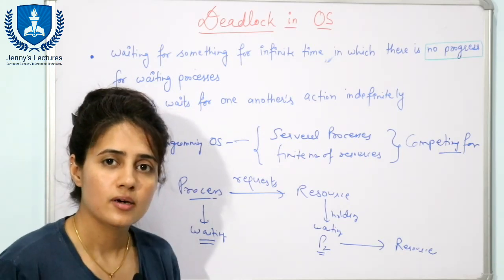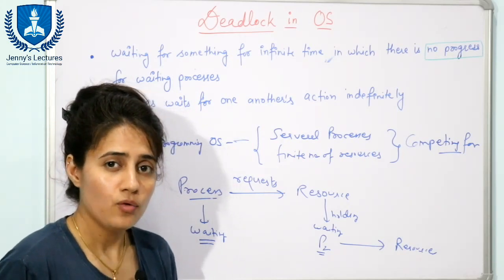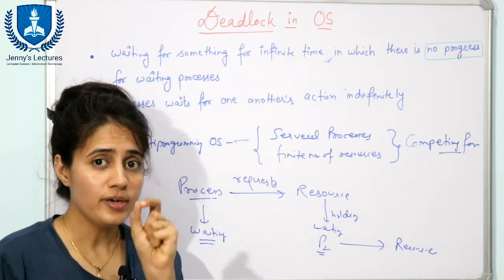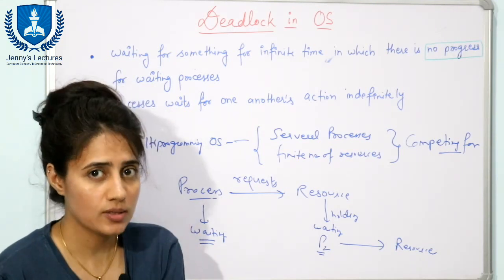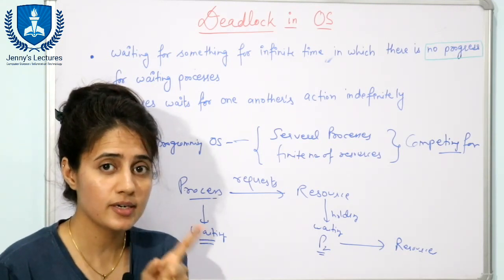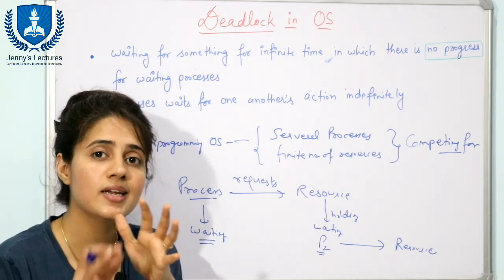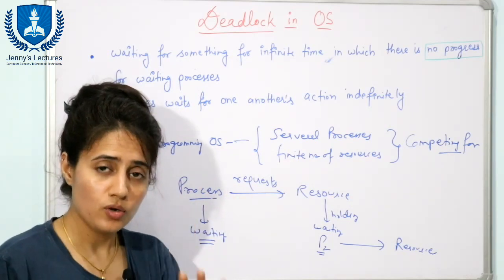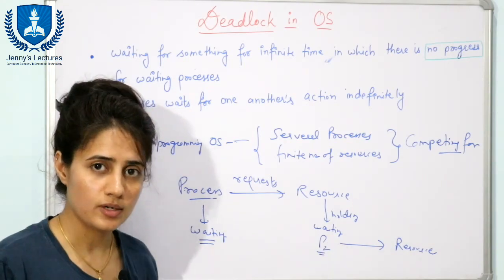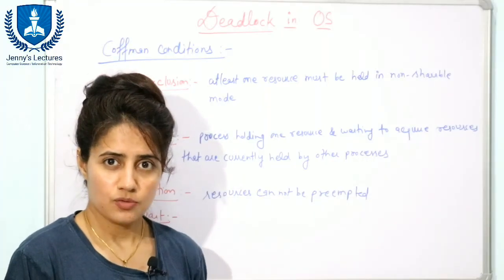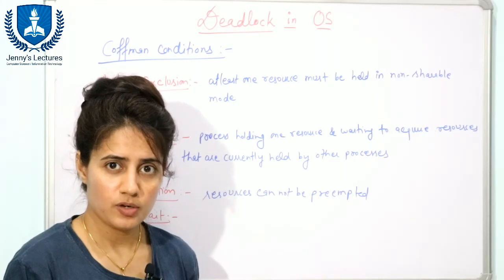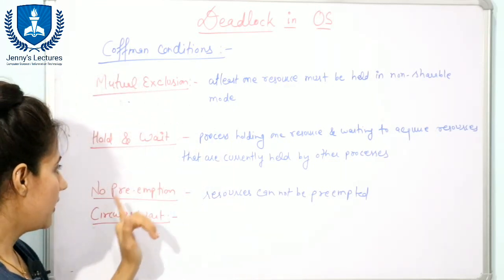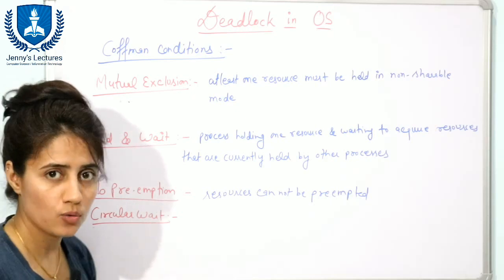Now we will discuss the four necessary conditions — note they are only necessary conditions, not necessary and sufficient conditions. These are also called Coffman conditions for deadlock. The four conditions are: mutual exclusion, hold and wait, no preemption, and circular wait.